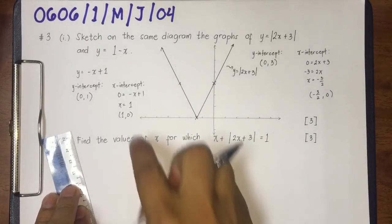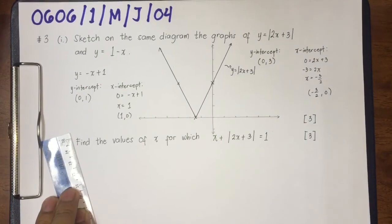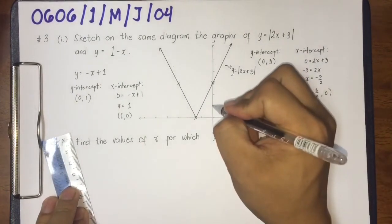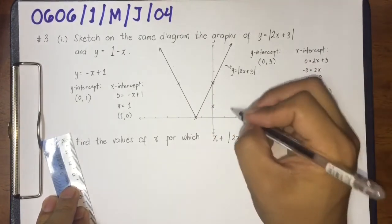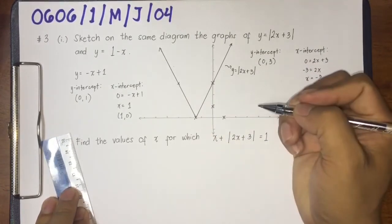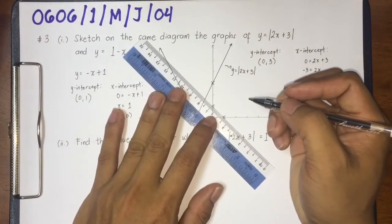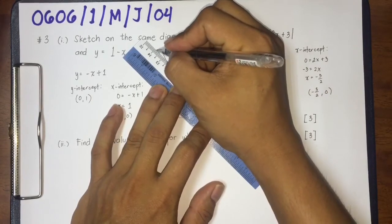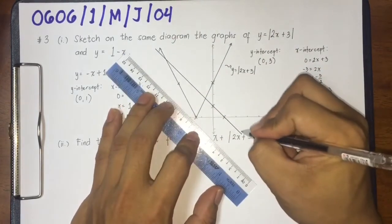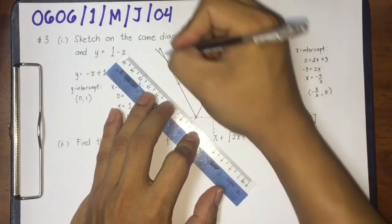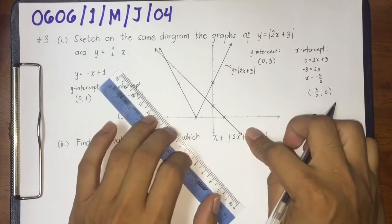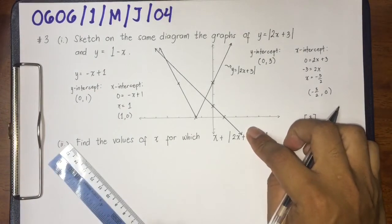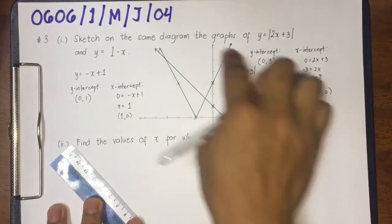Now we plot the points: (0, 1) for the y-intercept and (1, 0) for the x-intercept. I connect the two intercepts to get the graph. I continue the line going down because there is no modulus over y equals 1 minus x. That's the first problem completed.